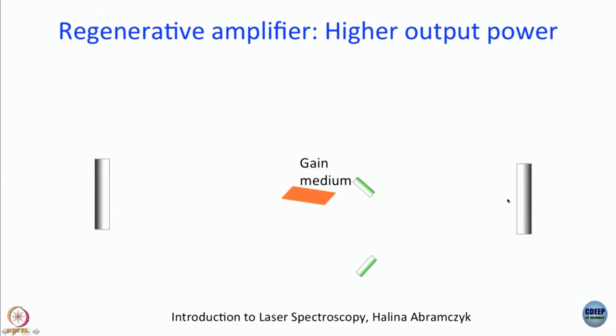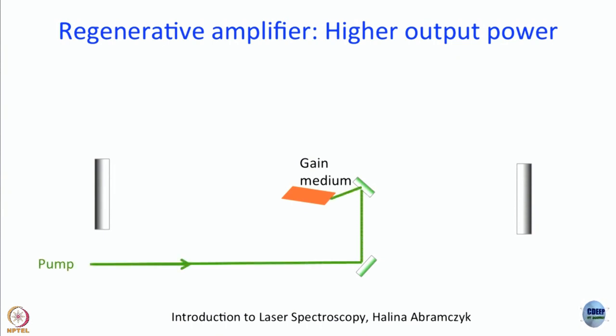You cannot afford to have an output coupler when amplifying, because before a sufficient number of passes is made, the beam will exceed the threshold and go out. So you have to use something else. First you pump the gain medium, excited-state population is built up, and then you put the seed in.